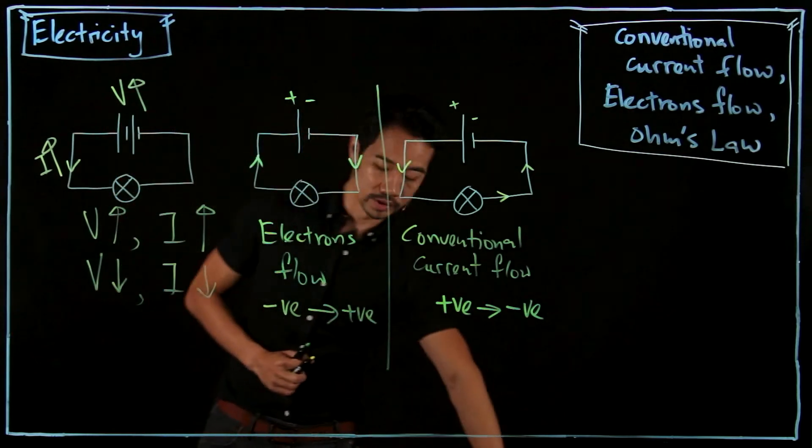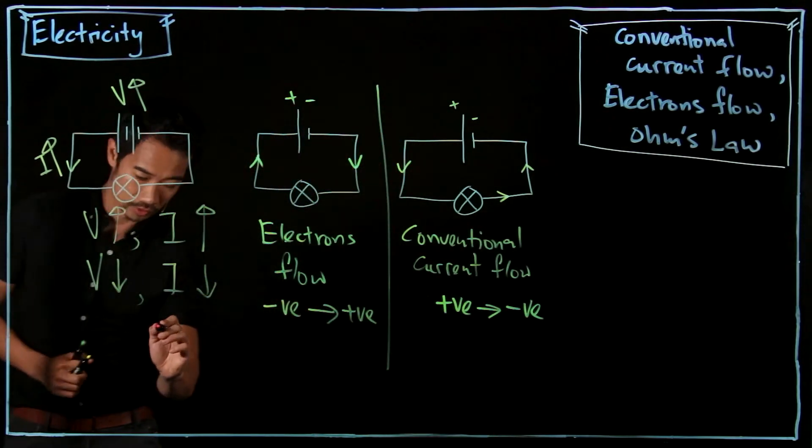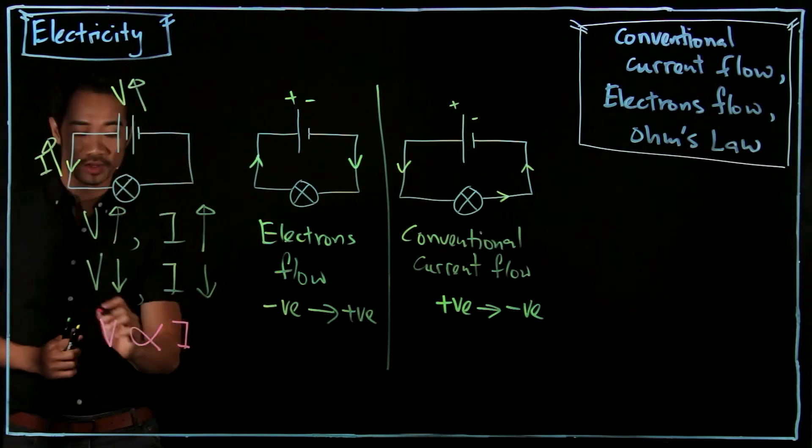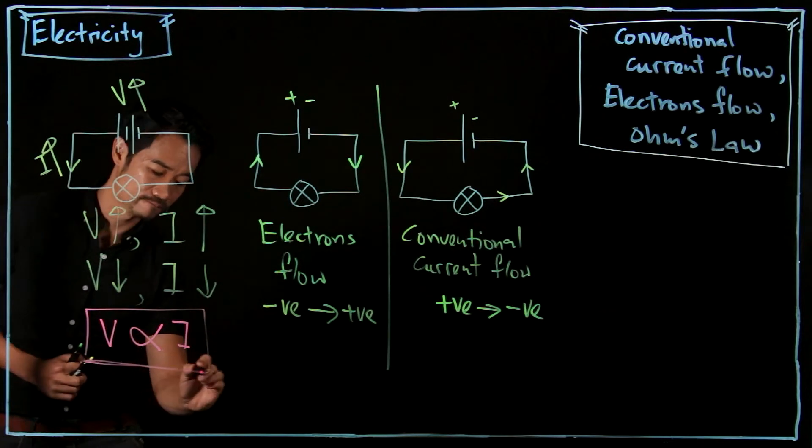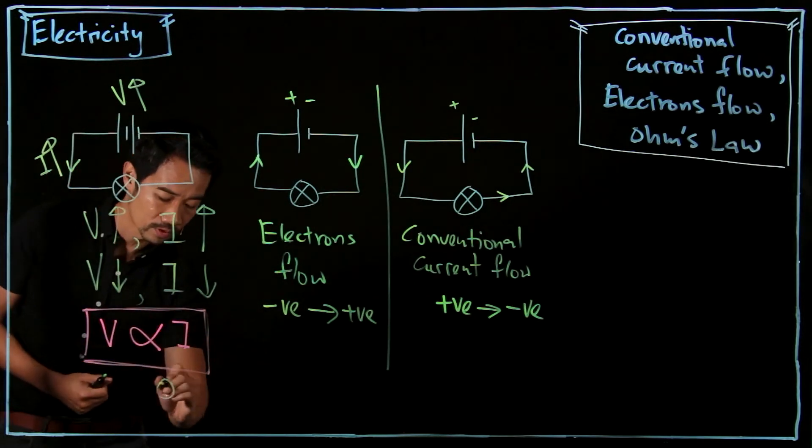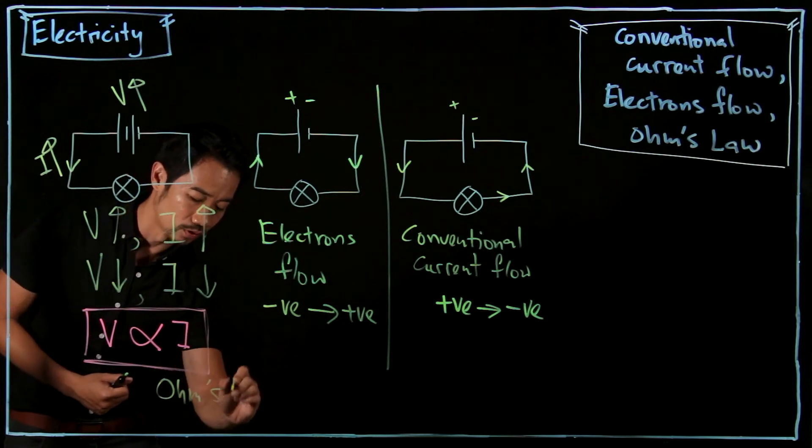This relationship, we learn in mathematics, is called proportional. So V is proportional to I. This concept over here is our foundation for Ohm's Law.